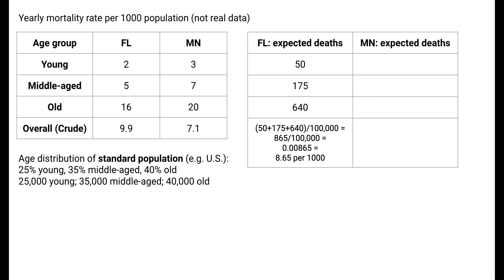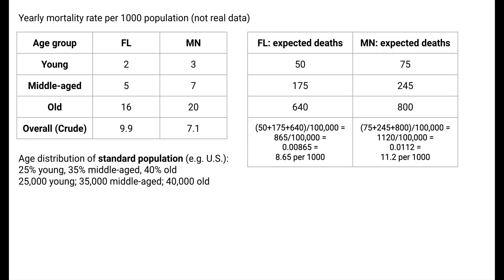In total, this is 865 deaths in the standard population of 100,000 people, which amounts to an age-adjusted yearly mortality rate of 8.65 per 1,000. Repeating this process for Minnesota, we get an age-adjusted yearly mortality rate of 11.2 per 1,000 population. Now we can more fairly compare Florida and Minnesota because they have been put on equal footing by being forced to have the same age distribution.